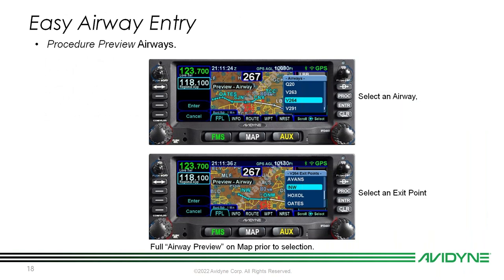Airway entry is super easy with procedure preview making it even easier. As you build your flight plan and reach a waypoint on an airway, you select the airway from the available list for that waypoint, then pick an exit point. The IFD automatically fills in all the waypoints along that airway up to the exit point — no punching in dozens of individual waypoints, especially useful on very long airways.